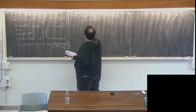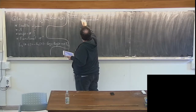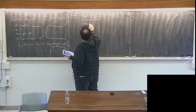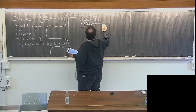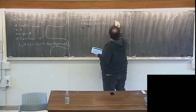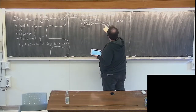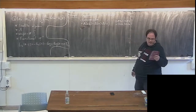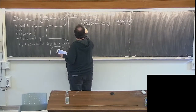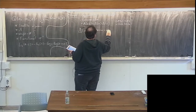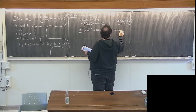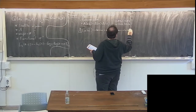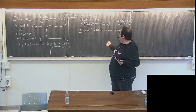We illustrated it with this example of having words made out of letters, and then you write all possible ways of splitting the word into two, and that gives you a map delta that satisfies all the properties if the multiplication is the shuffle product.